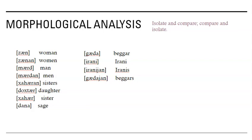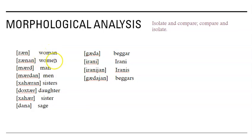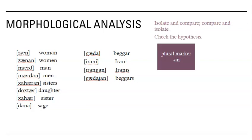How do we do that? We're going to compare. I see 'woman' and 'women' — so this is the singular form and this is the plural form. I'm starting to notice a pattern: singular form, plural form. Do you see it too? The plural marker in this language seems to be a suffix, '-an'.